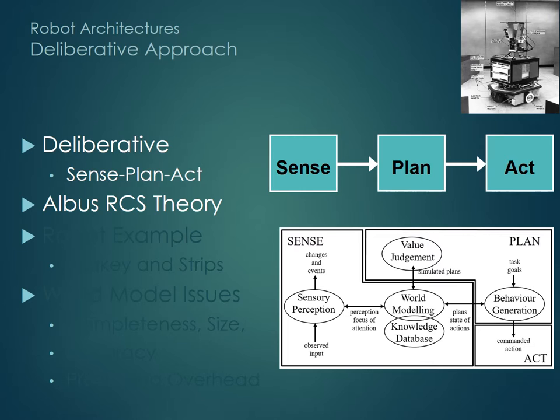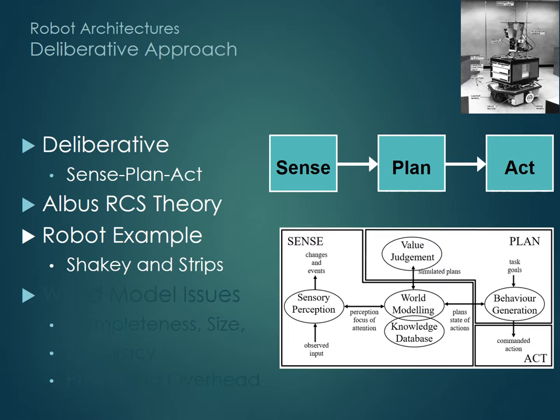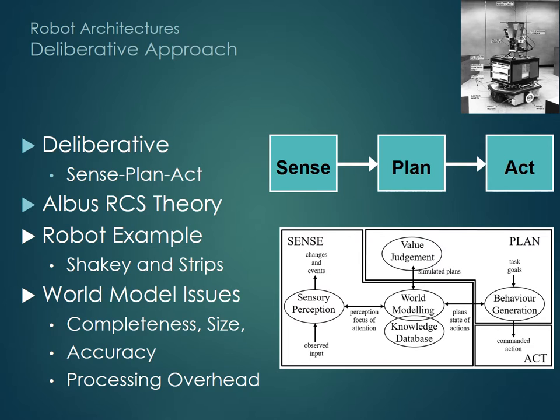Looking at the deliberative approach: this is derived from Albus's work on intelligence, and hangs around the model of the world. It was used for several NASA and DARPA automated systems, as well as the Shaky robot introduced in Part 1. Shaky didn't work so well at the time, owing to the huge amount of information required for a workable and sufficiently complete world model, and the data processing overheads in its use — since at every step the incoming sensor data has to be integrated into the model to plan the next action before it could move.